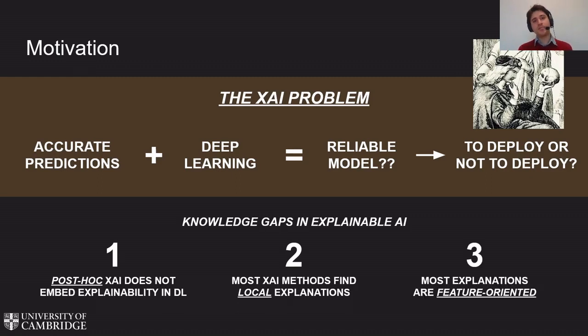And third, most explanations are feature-oriented. For example, feature scoring methods identify the most important feature, yes, but they do not explain how such features are combined by the neural network to make decisions.